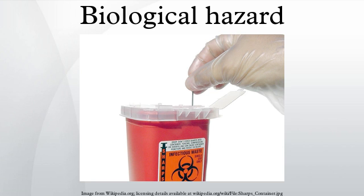The biohazard symbol was developed by the Dow Chemical Company in 1966 for their containment products. According to Charles Baldwin, an environmental health engineer who contributed to its development, "We wanted something that was memorable but meaningless, so we could educate people as to what it means." In an article he wrote for Science in 1967, the symbol was presented as the new standard for all biological hazards. The article explained that over 40 symbols were drawn up by Dow artists.